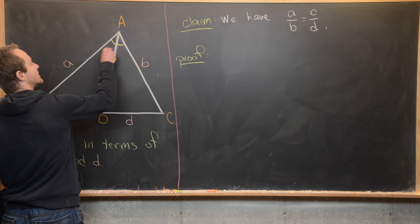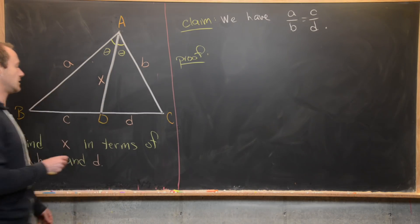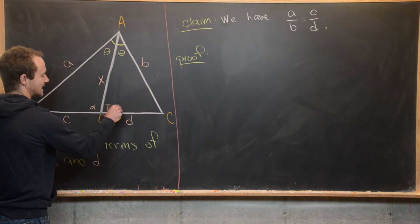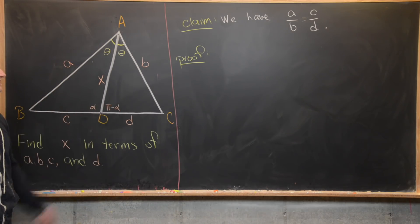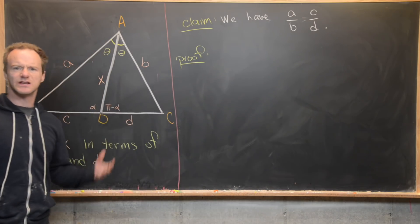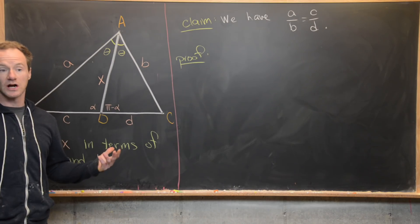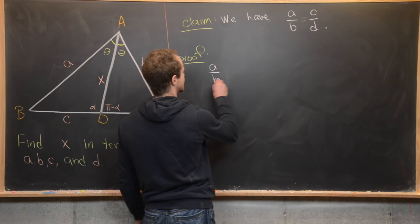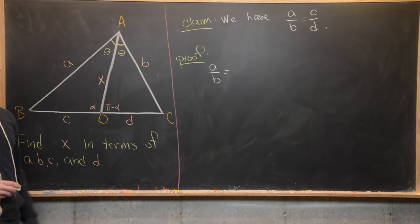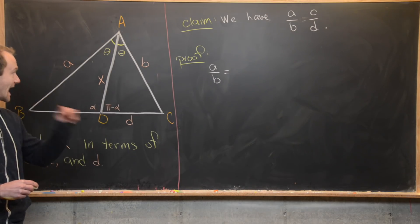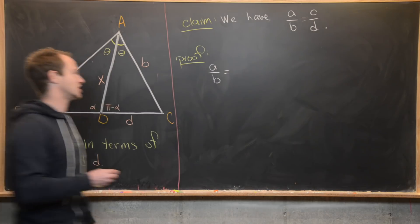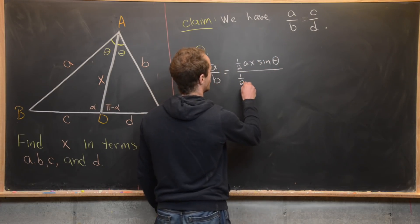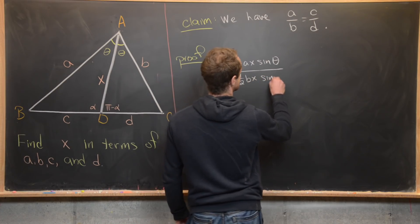Let's see how we can prove this. I'm going to give some names to these angles and then apply the formula we just had. I'll call this one theta, which makes the bisected angle theta as well. Next I'll call this one down here alpha, which makes the supplementary angle pi minus alpha. Now I'll work from the left hand side to the right hand side using the previous area result. Starting with A over B, I can multiply the numerator and denominator by one half x sine theta without changing anything.